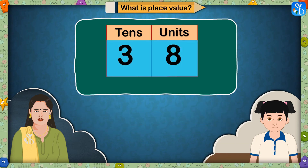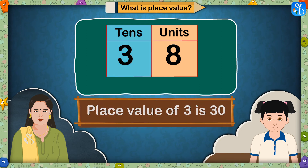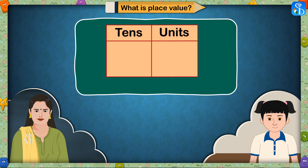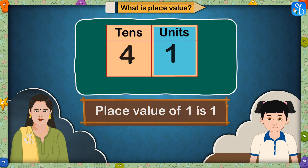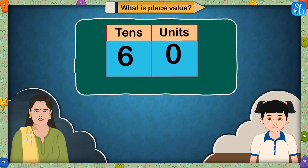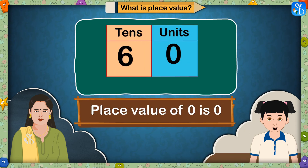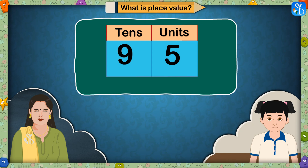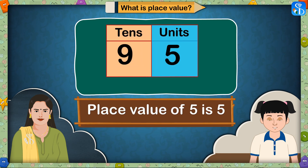Tell me the place value of both the digits in the number 38. The place value of 3 is 30 and the place value of 8 is 8. What are the place values of both the digits in number 41? The place value of 4 is 40 and the place value of 1 is 1. Tell me the place values of both the digits in the number 60. The place value of 6 is 60 and the place value of 0 is 0. Tell me the place values of the digits in 95. The place value of 9 is 90 and the place value of 5 is 5.